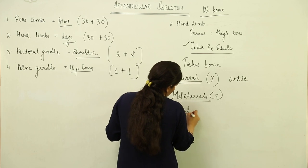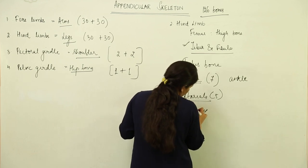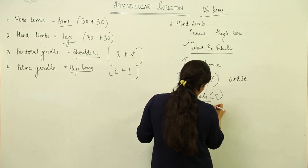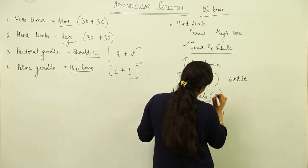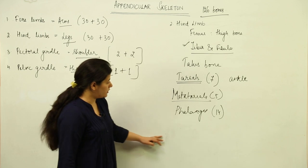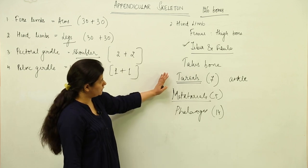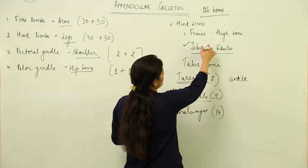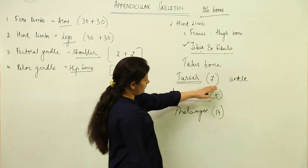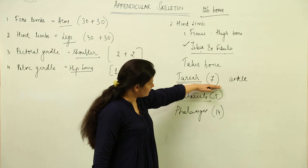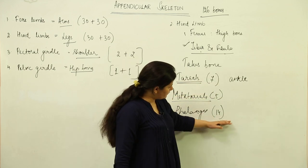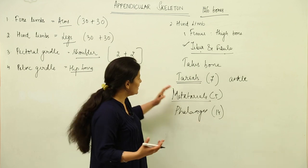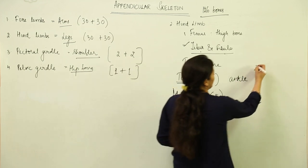The hind limb also has phalanges — digits and toes — totaling 14, similar to the forelimb. Counting up: 14 phalanges plus 5 metatarsals plus 7 tarsals equals 26 bones; adding tibia and fibula gives 28, plus femur gives 29. The remaining bone, accounting for the full 30, is the patella.